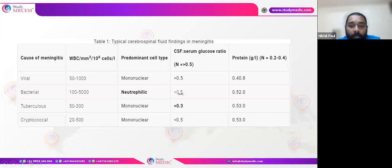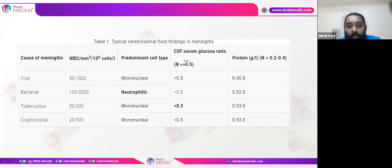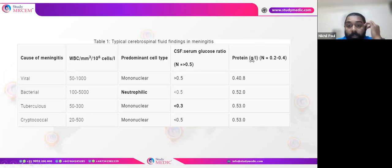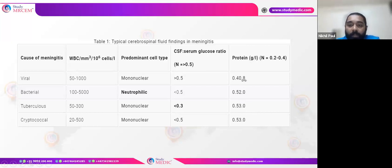How to identify whether meningitis is viral, bacterial, or tubercular by CSF: in bacterial meningitis, cells are predominantly neutrophils; CSF glucose is reduced (CSF-to-serum glucose ratio less than 0.5); and CSF protein is increased. In viral meningitis, CSF glucose is normal or slightly increased, protein is normal or reduced, and cells are mononuclear. Tubercular and fungal meningitis also show reduced CSF glucose and increased protein.